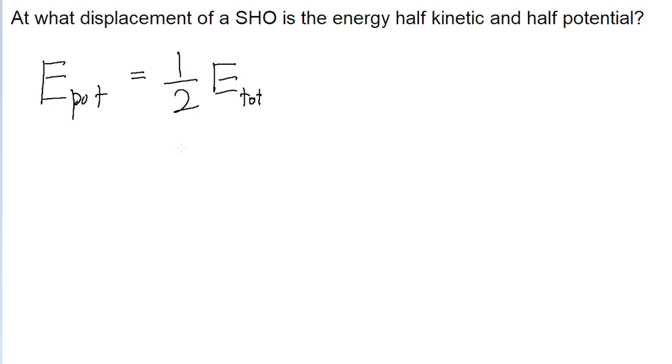Because remember, that with a simple harmonic oscillator, the formula for potential energy is equal to one-half multiplied by the spring constant multiplied by the square of the displacement. So it includes the variable we're looking to solve for.